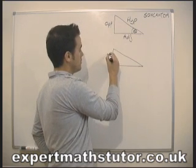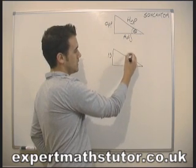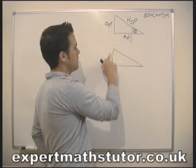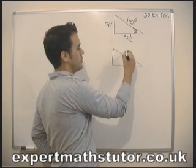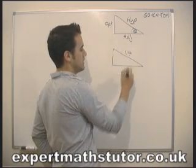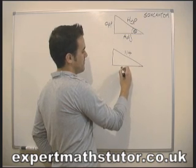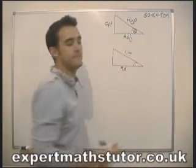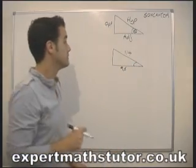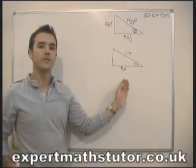So this time I'm told that the opposite is 13. The hypotenuse is 114 and the adjacent is 96. And I need to work out what this angle is. I need to work out theta. How on earth do I do that?